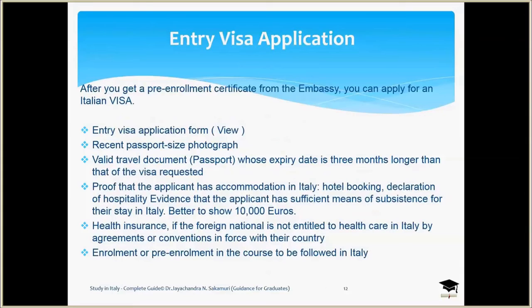Proof of accommodation is very important. You will also need passport-size photographs, health insurance, and proof of funds to support your living and education in Italy. Other required documents include your travel document, photographs, and of course the pre-enrollment copy. Once you submit all these documents, they will process them and issue a three-month visiting visa. With that visa you travel to Italy, then visit a local authorization center such as a local police station, where they will verify your documents and issue a residence permit.